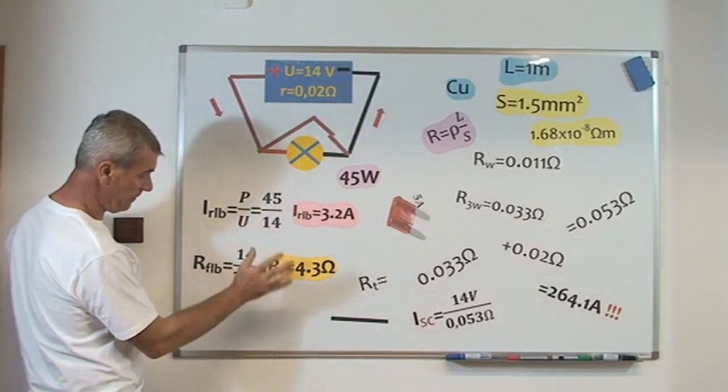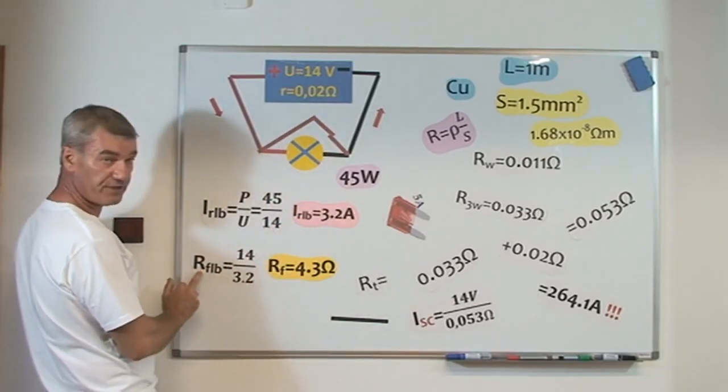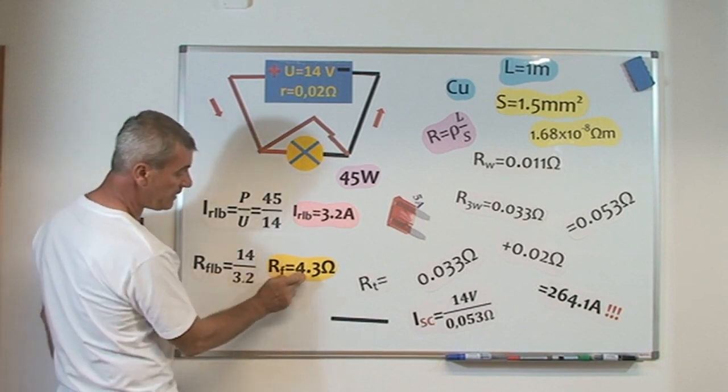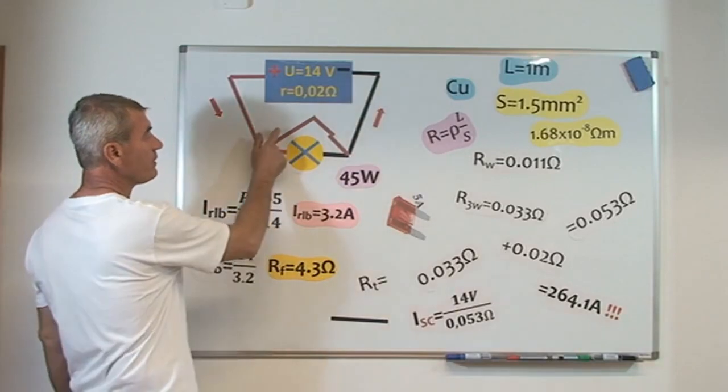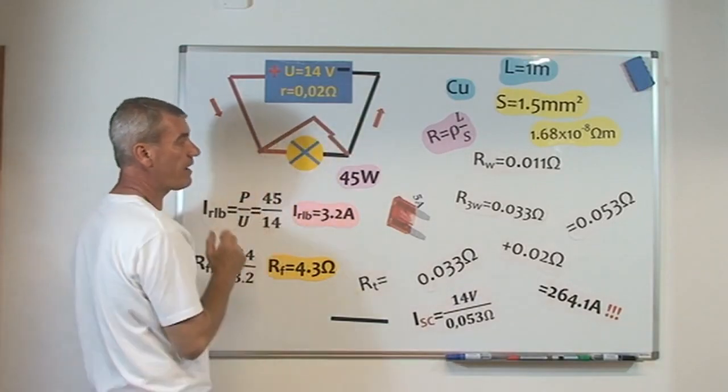I see here, the electrical resistance of the filament of the light bulb is 4.3 ohms. What happened with our electrical resistance of the wire?